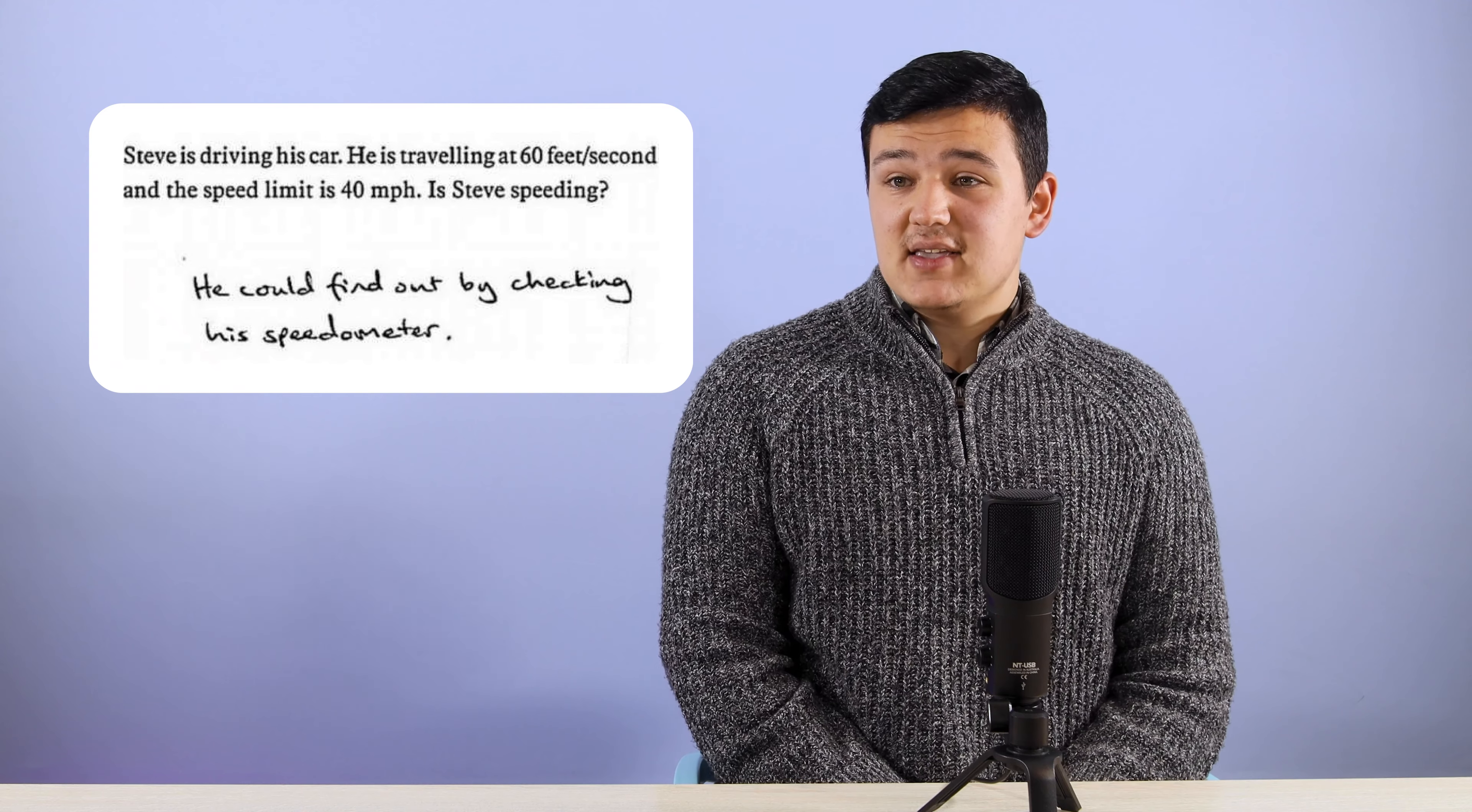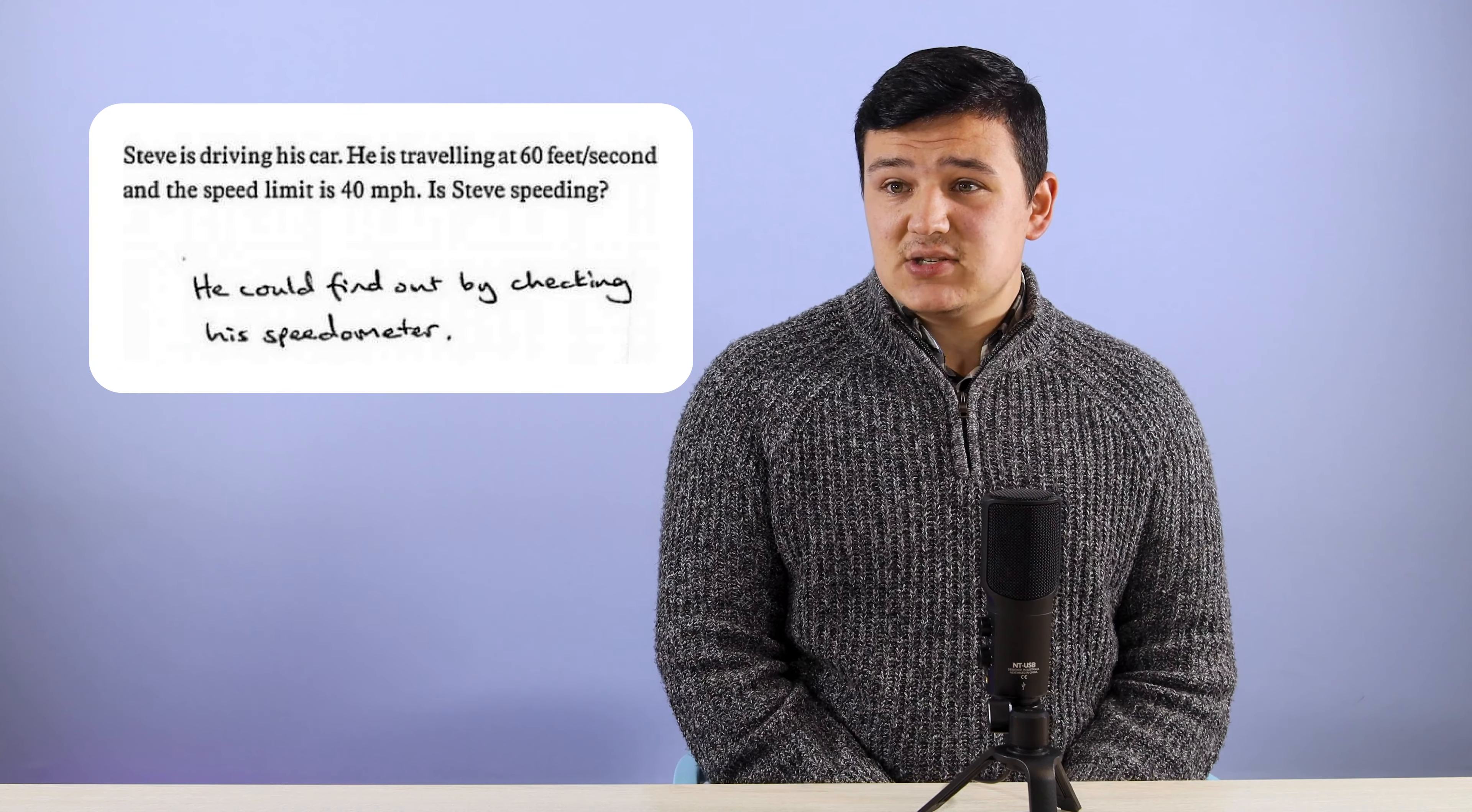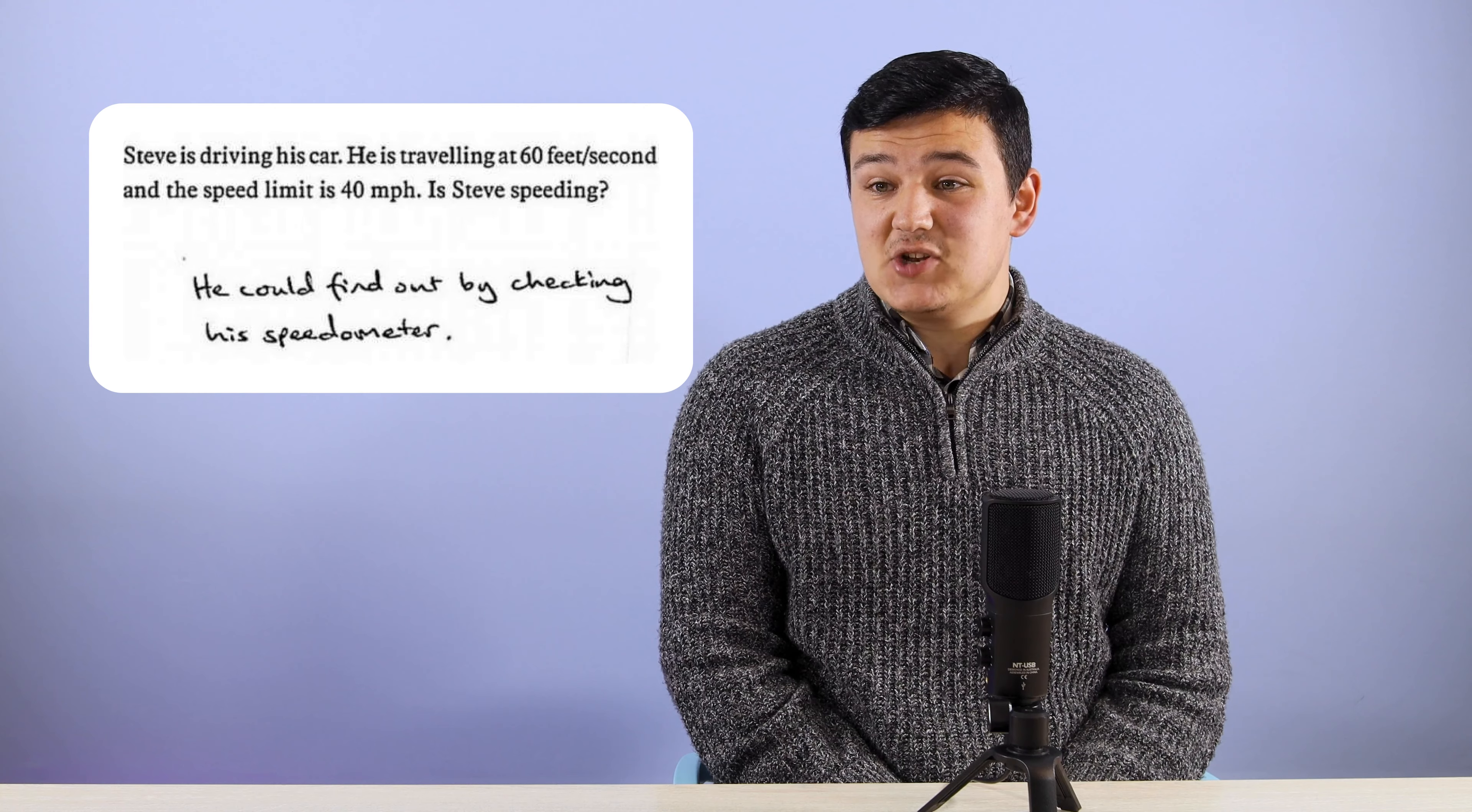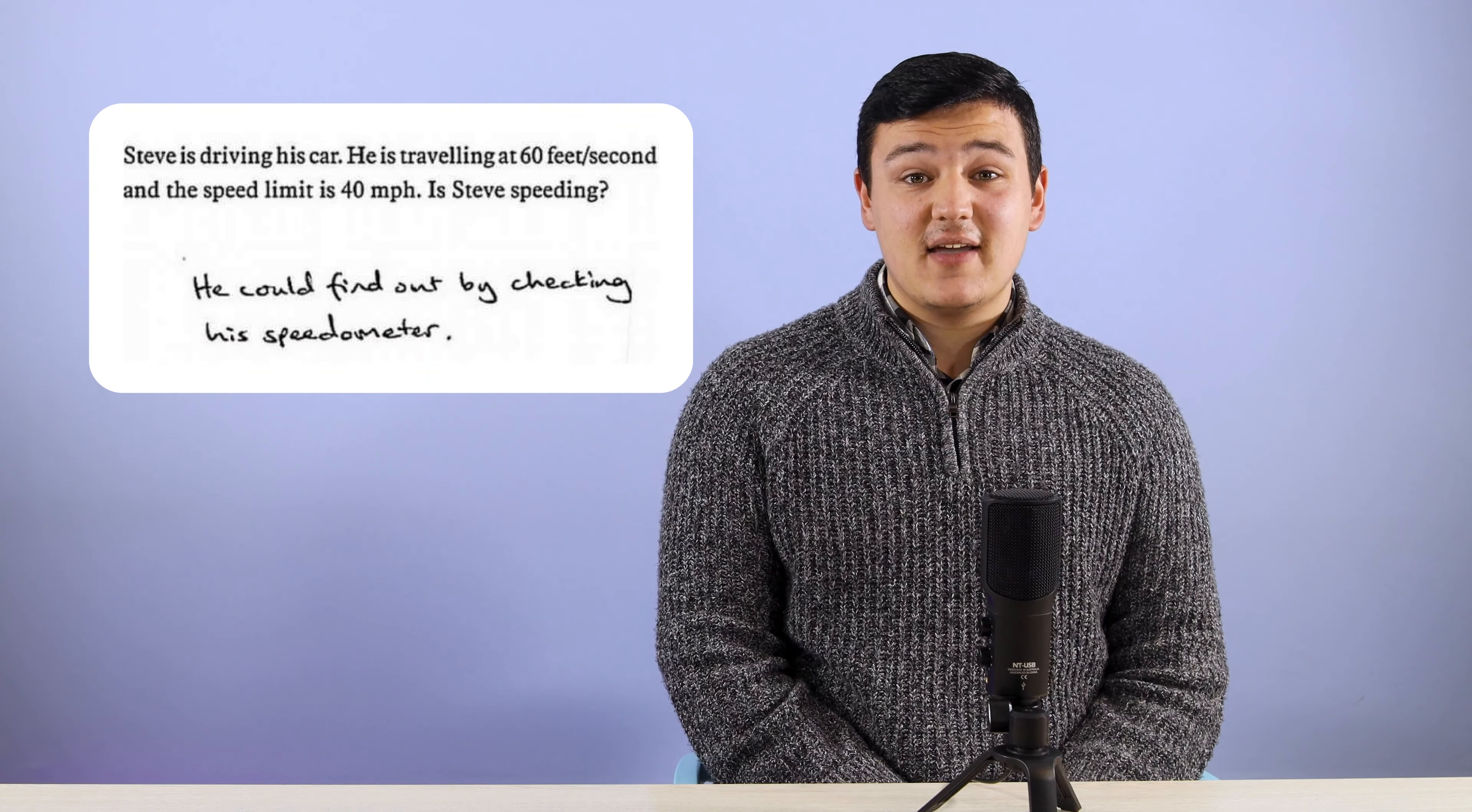Steve is driving his car, he's traveling at 60 feet a second and the speed limit is 40 miles per hour. Is Steve speeding? He could find out by checking his speedometer. Well at least I know you're gonna pass the K53. That is a clever kid.